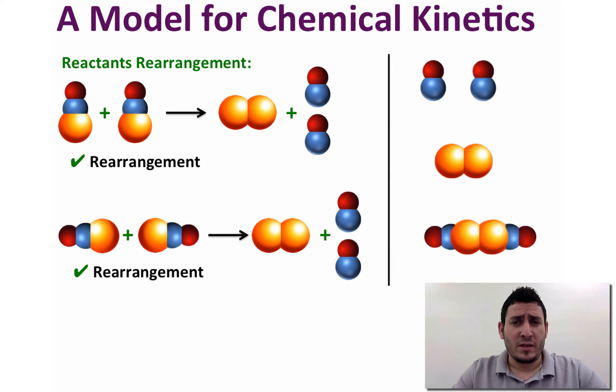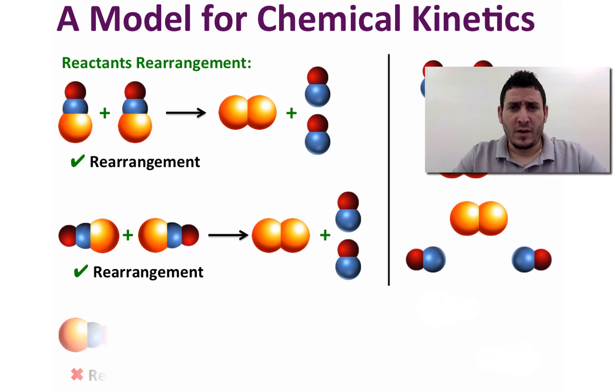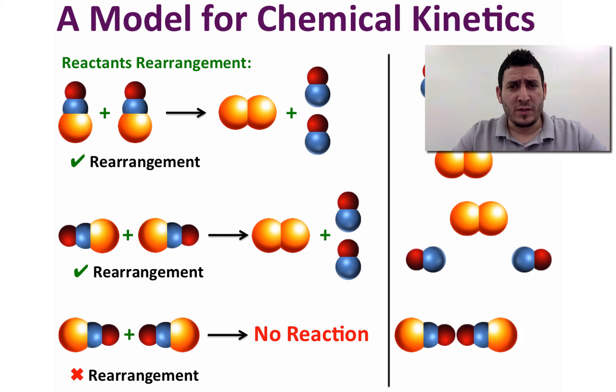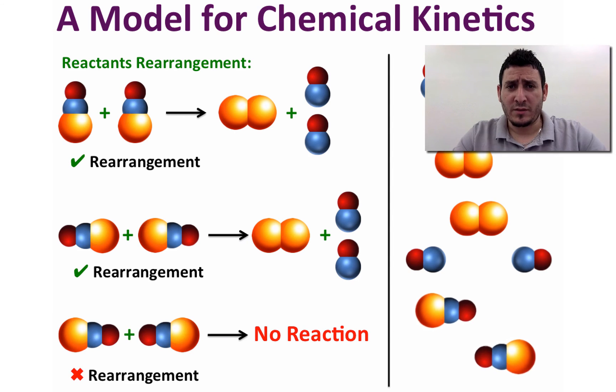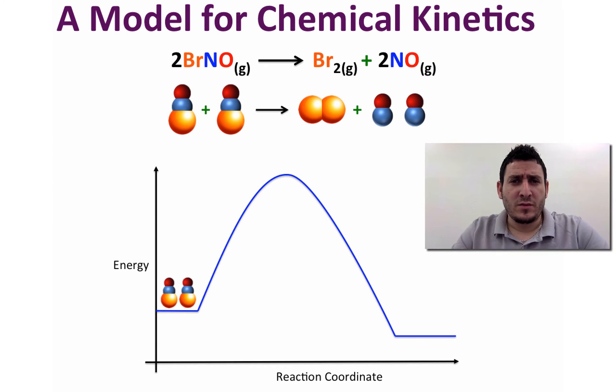Take for example, these two examples of the correct arrangement where the reaction can occur. However, for this arrangement a reaction cannot happen. As a result, for reactants to form products the collision must occur with enough energy to overcome the activation energy of the reaction and the collision must occur with the correct orientation.